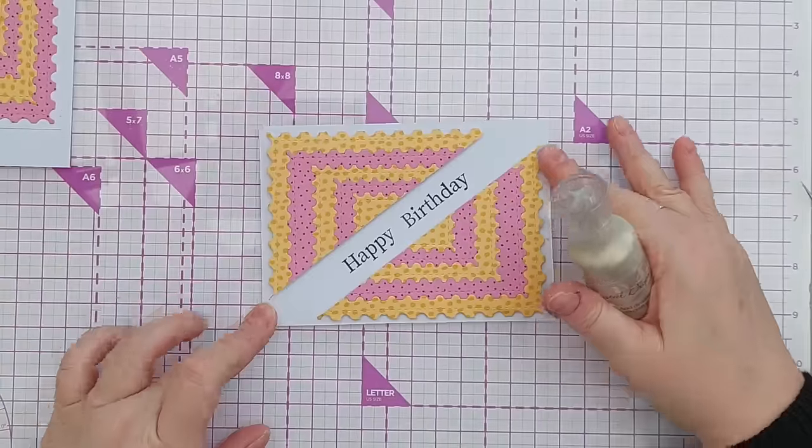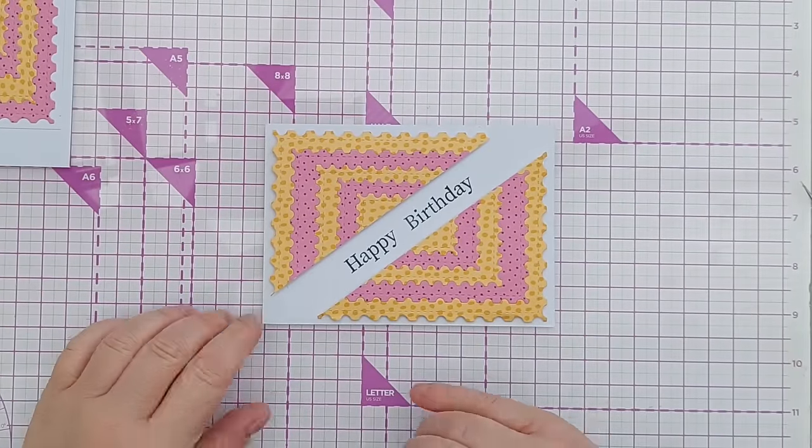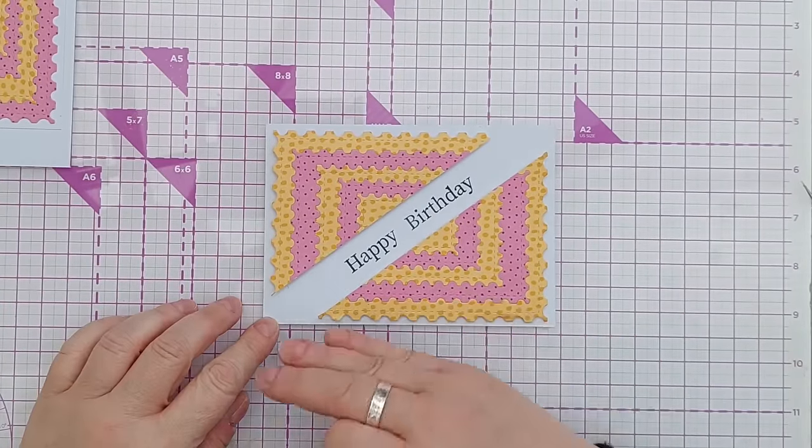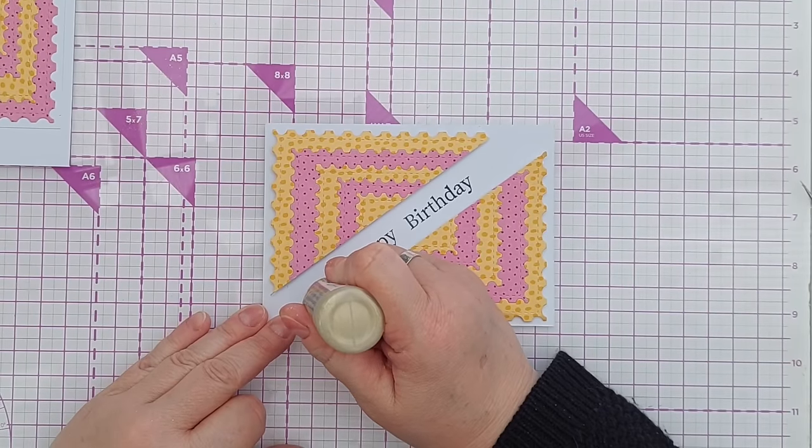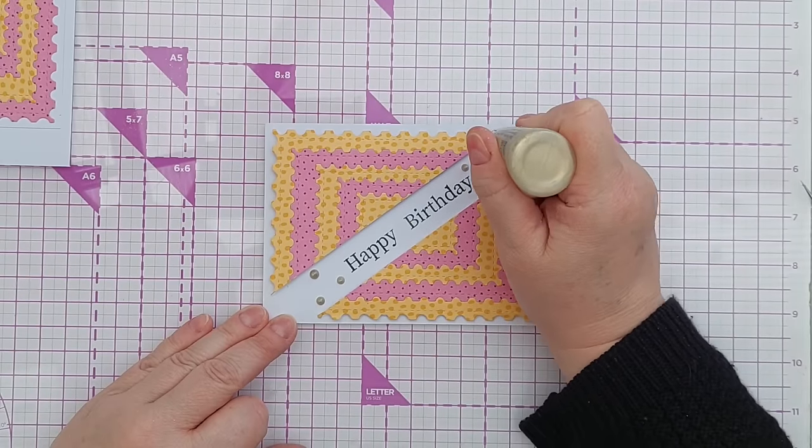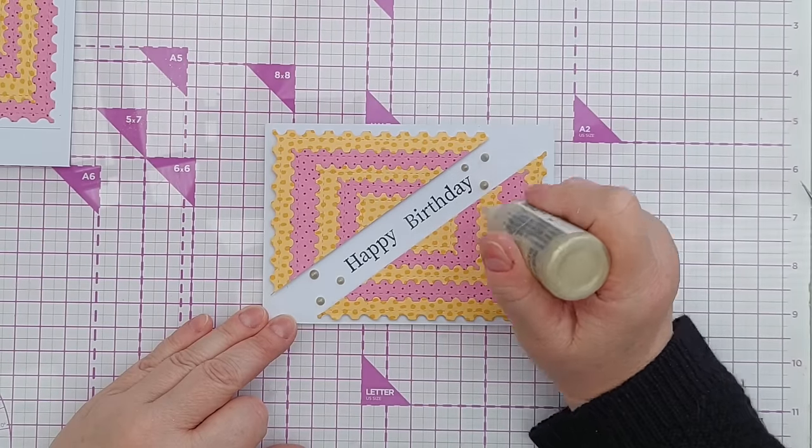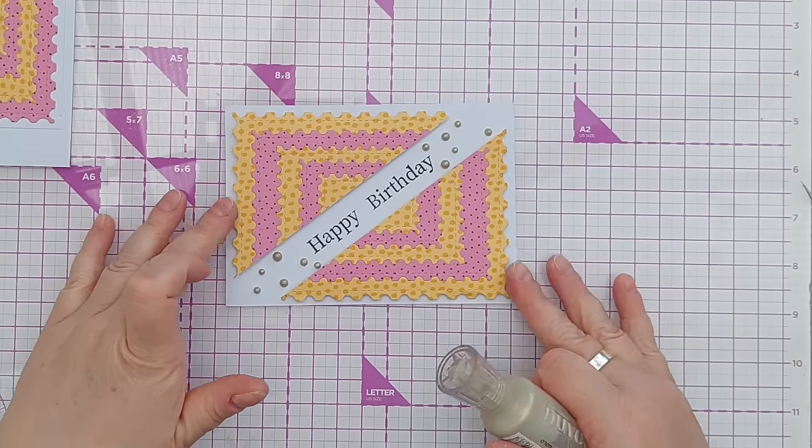And you could have it that way up or I think it looked quite nice as a landscape card and then the happy birthday is reading a bit better. And I think to add a bit of bling I'm just going to add some gold Nouveau drops.